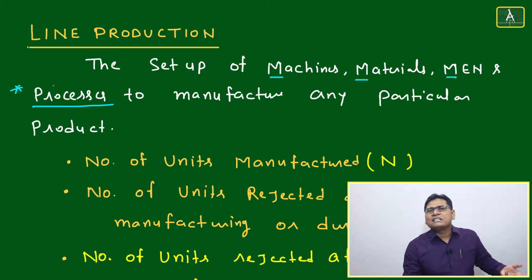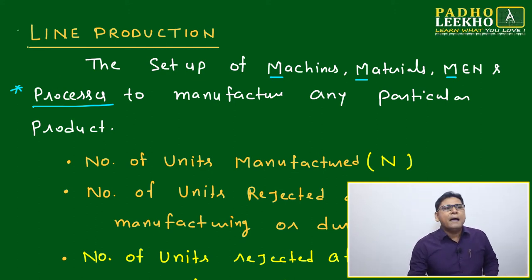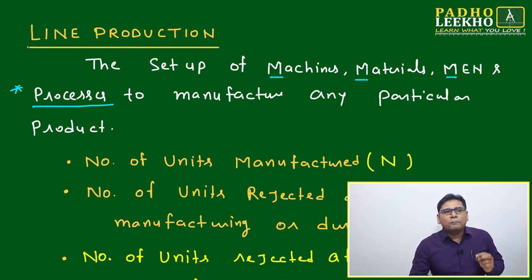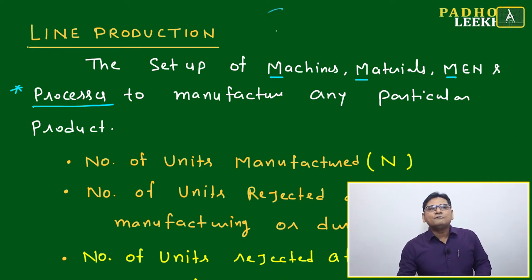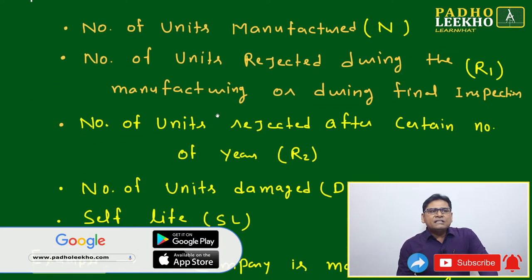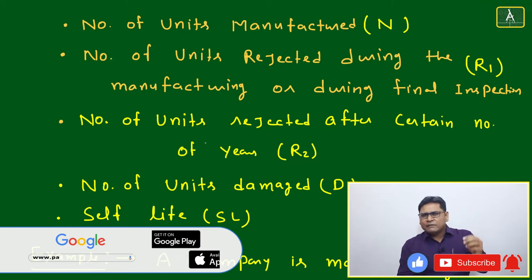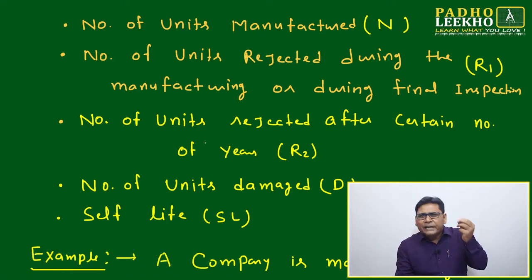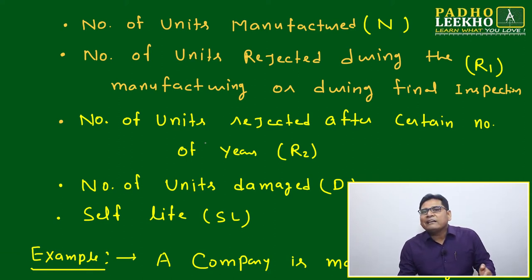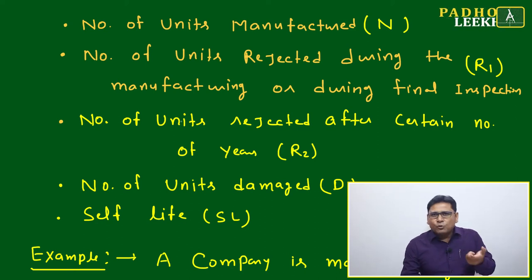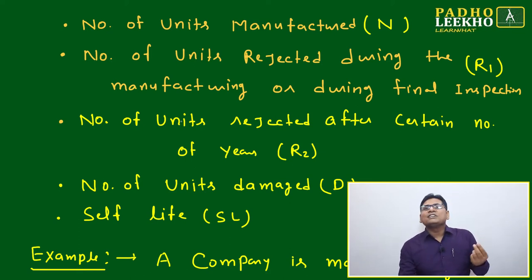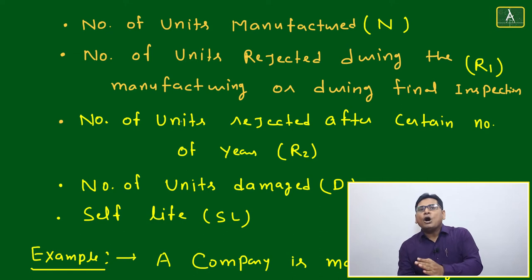We are not here to learn engineering — we are going to discuss the DI caselet based on line production. To set up a production line for a particular product, these four pillars — Man, Machine, Material, and Processes — are needed. As mathematics students, we look at everything through the lens of math, so we view line production from a mathematical point of view.